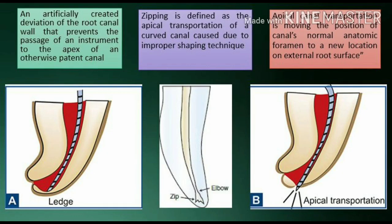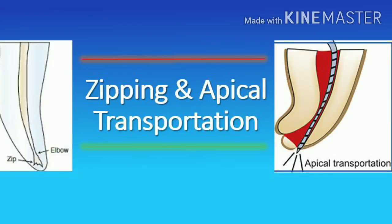Let's understand three terms. A ledge is an artificially created deviation of the root canal wall that prevents the passage of an instrument to the apex of an otherwise patent canal. Zipping is defined as the apical transportation of a curved canal caused due to improper shaping technique. The elbow is the narrowest portion of the zipped canal, and a zipped canal is apical to the elbow — usually obturation ends at the elbow. Apical canal transportation is the moving of the position of the canal's normal anatomic foramen to a new location on the external root surface.